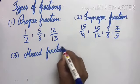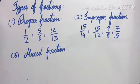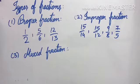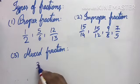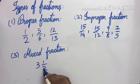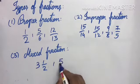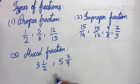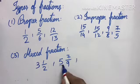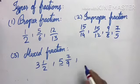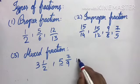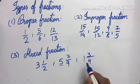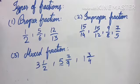The third type is mixed fraction — a combination of a whole number and a proper fraction. For example, 3 and 1/2 is a mixed fraction; 5 and 7/9 is also a mixed fraction. There must be one whole number and one proper fraction together, like 1 and 3/4.